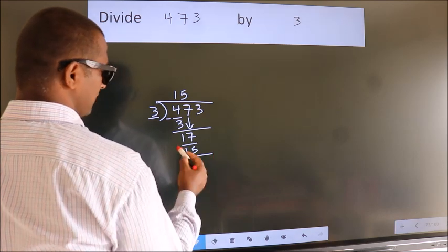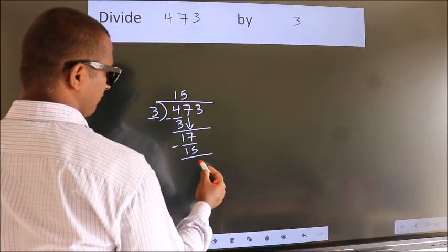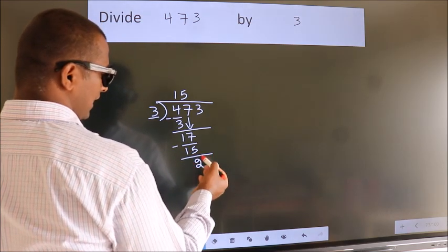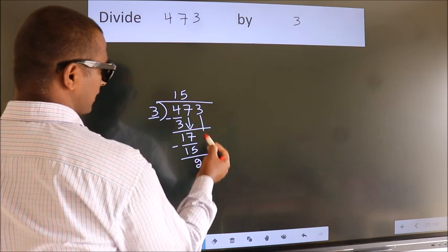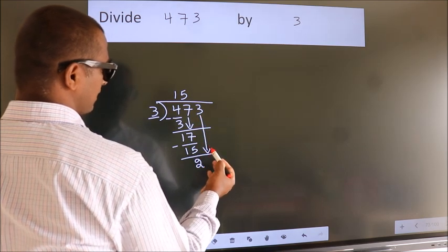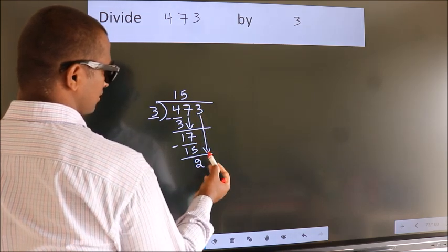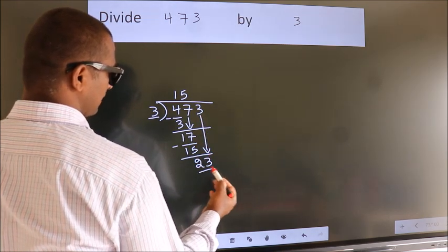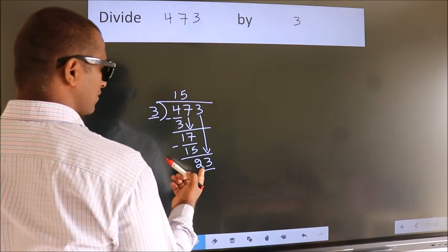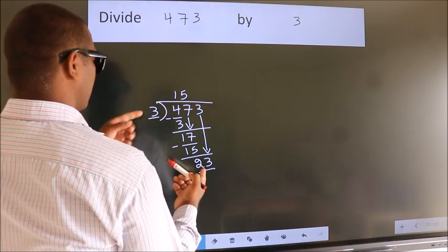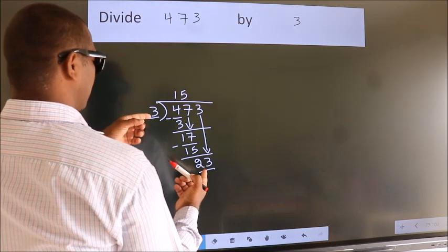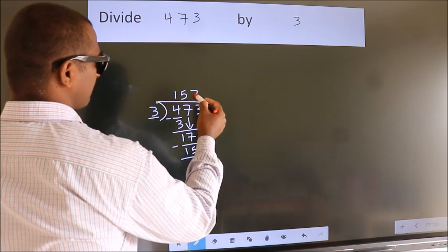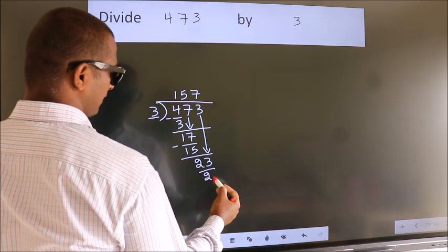Now we subtract. We get 2. After this, bring down the beside number. So, 3 down — so, 23. A number close to 23 in the 3 table...